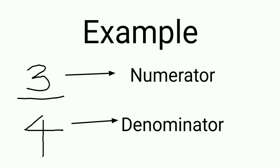Look at this example: 3 upon 4. Here, 3 is the numerator and 4 is the denominator. Since 3 is less than 4, this is a proper fraction.